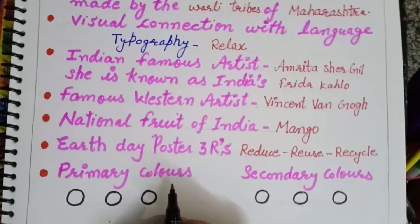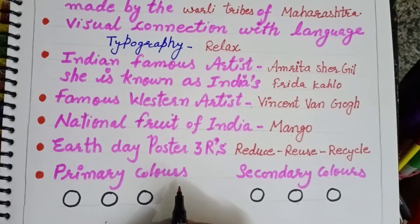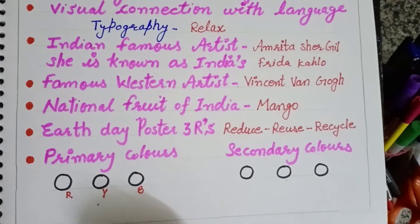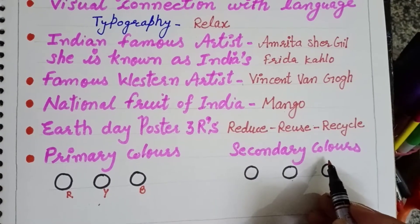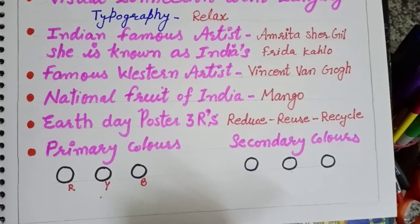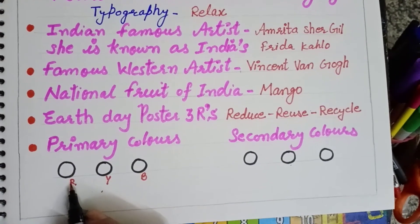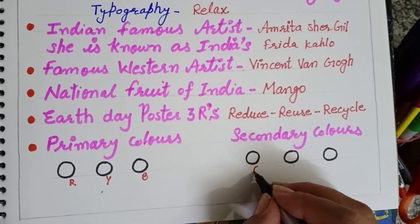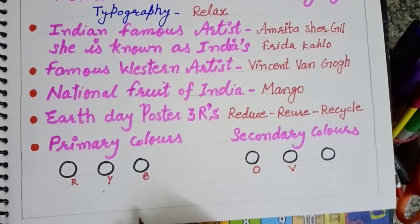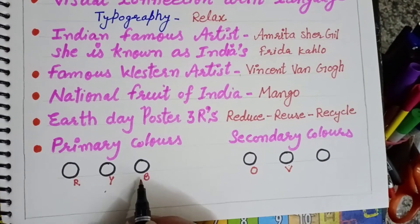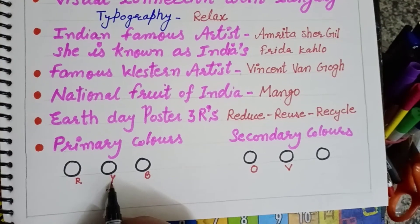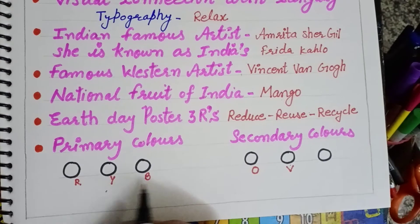Then primary colors: Red, Yellow, and Blue. Secondary colors — when we mix equal parts of primary colors, we get secondary colors. For example, when we mix red and yellow, we get Orange. Yellow and blue gives Violet. Red and blue gives Violet.